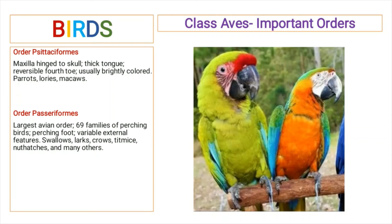Order Passeriformes is the largest avian order. It possesses 69 families of perching birds. They have a perching foot and a variety of external features. It includes swallows, larks, crows, titmice, nuthatches, and many others.